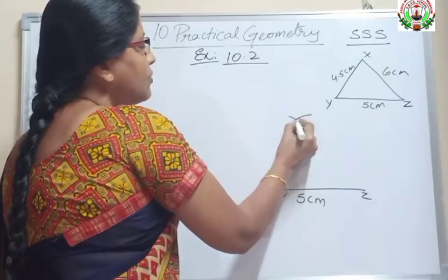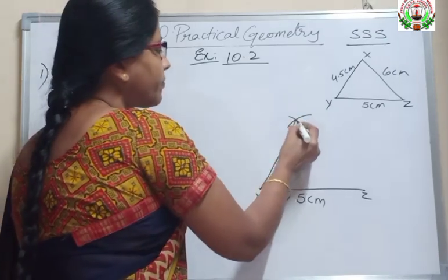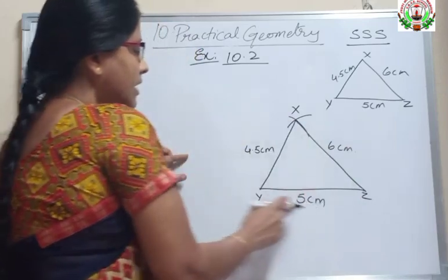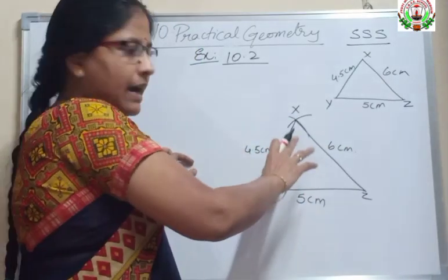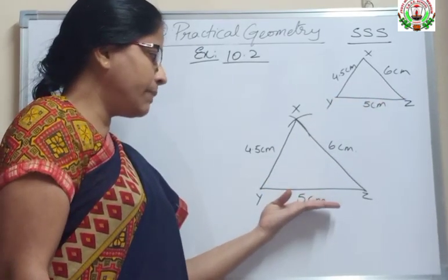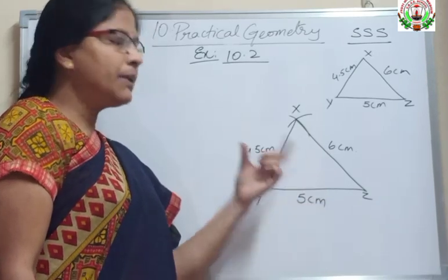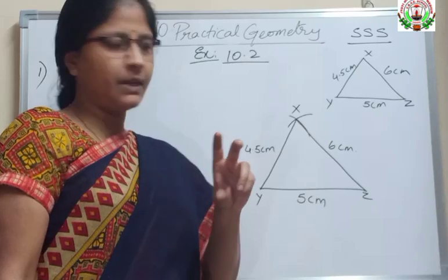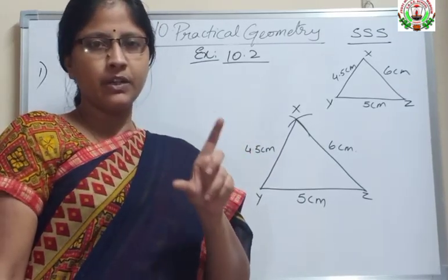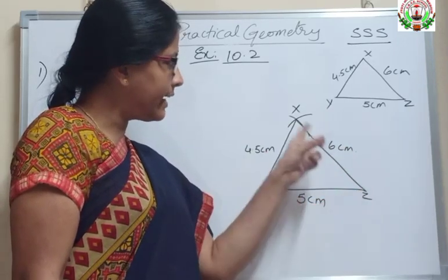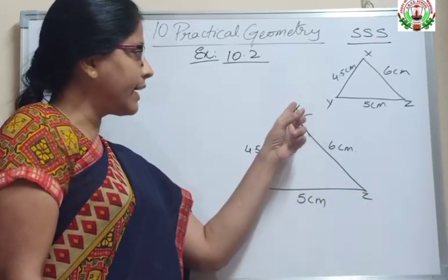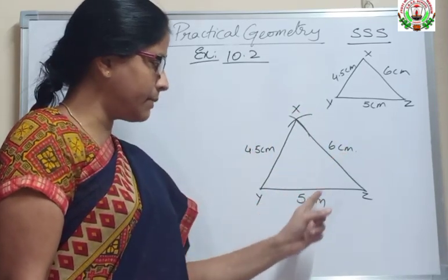Next, measure 6 cm using your scale and your rounder. Again measure 6 cm, keep the metal point at Z and cut that arc — meaning the two arcs should meet at a point. So when you join using your scale, joining these points, X will be there. This will be 4.5 cm and this will be 6 cm. This is the correct figure which we are going to get after constructing our triangle.